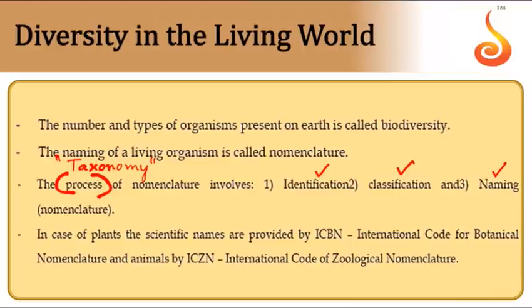Identification means attributing certain features to an animal. For example, you encounter an animal and identify it as an insect because it has a head, thorax, abdomen, and six legs. Then you need to know in which group to place this animal based on the similarities and dissimilarities it shares with other organisms.